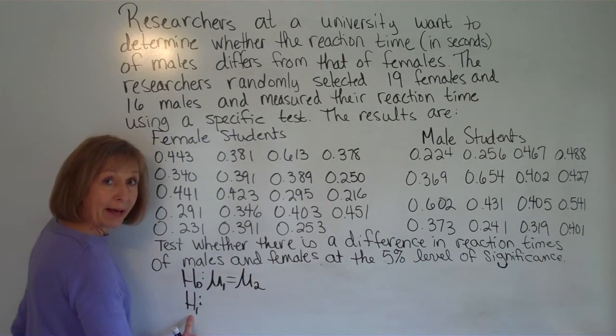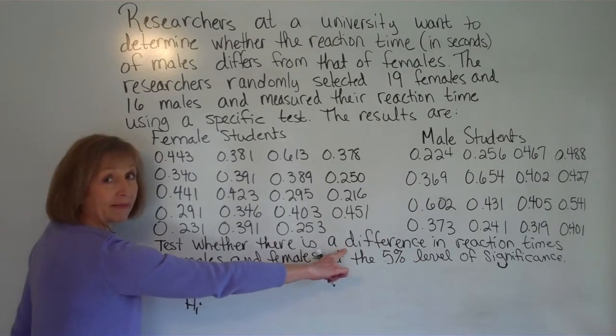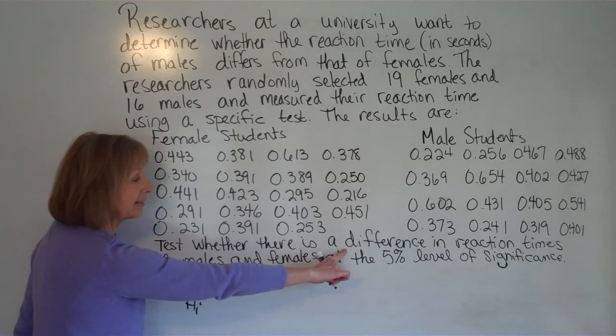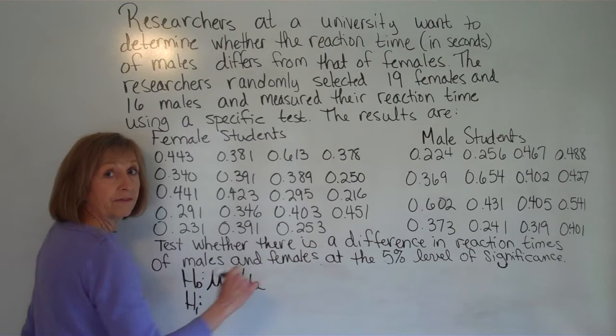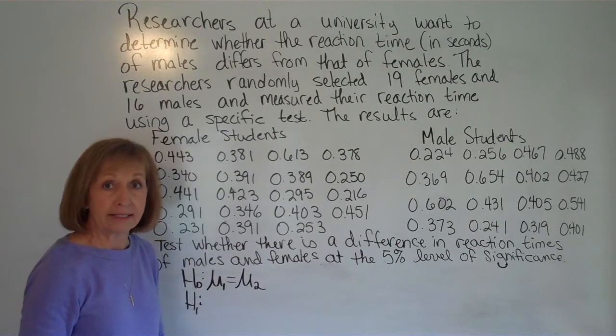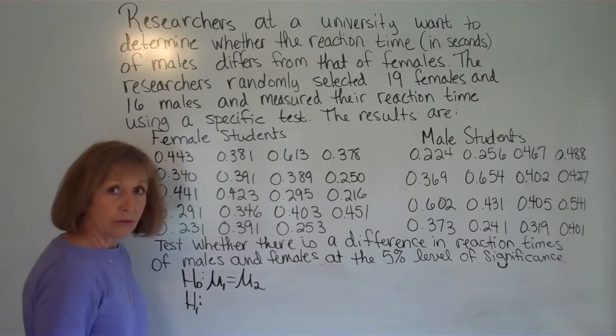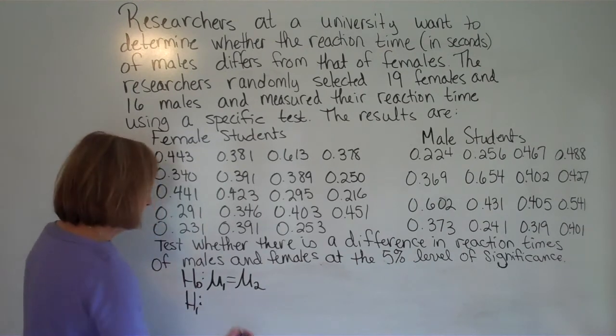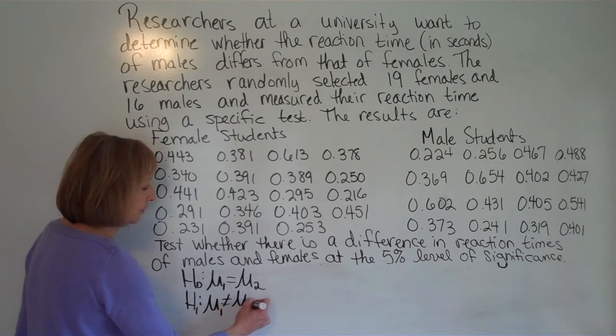And then in the alternate hypothesis you could go by what they ask you to test and this just says is there a difference. So if just as is there a difference and it doesn't say which way like greater than or less than or anything like that faster or slower just is there a difference then your alternate is going to be mu sub 1 not equal to mu sub 2.